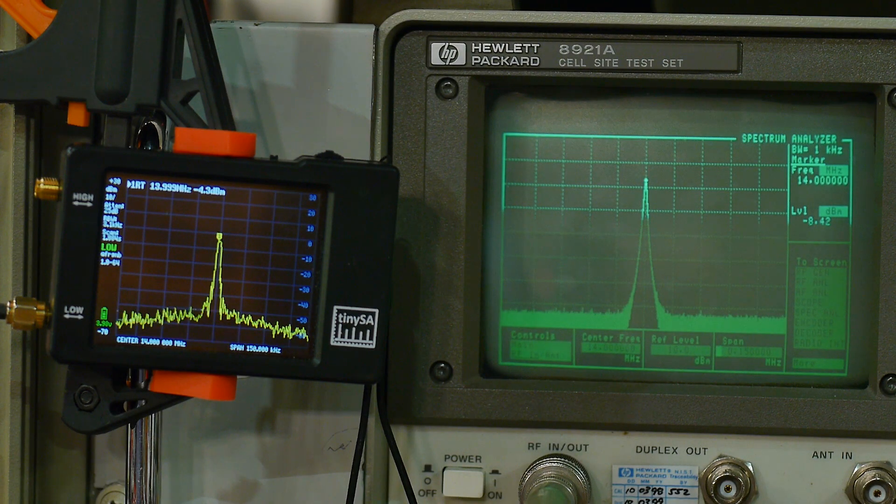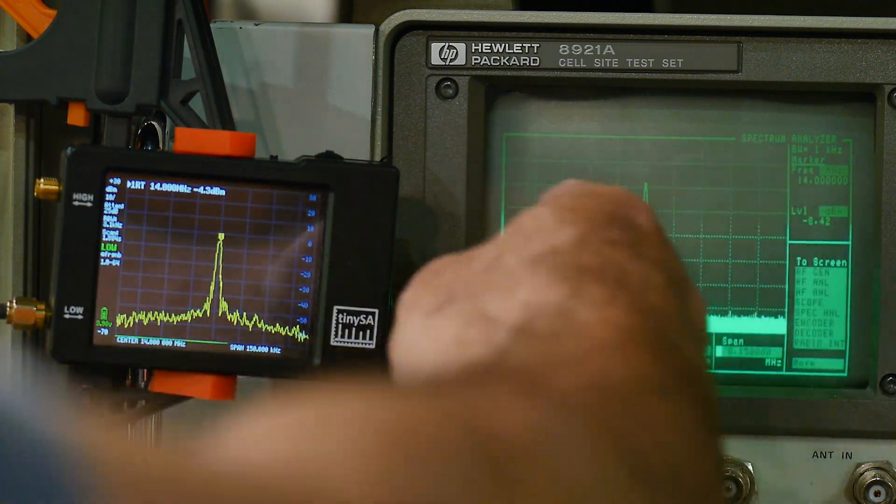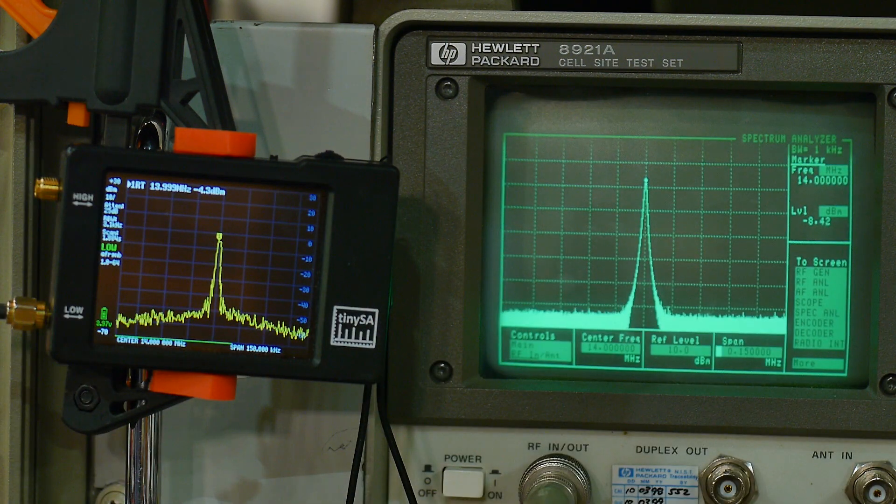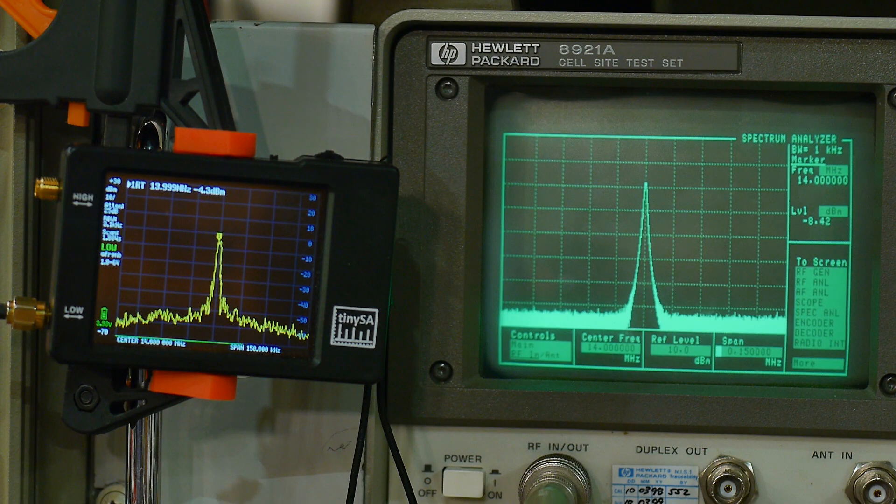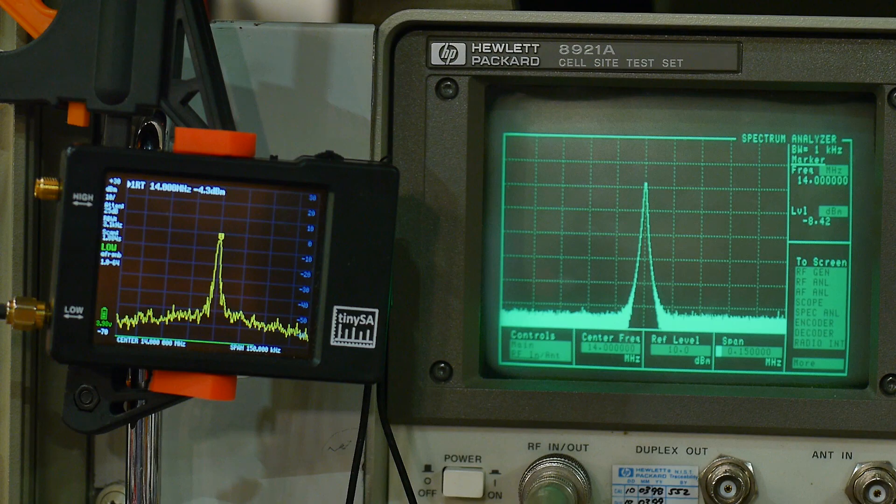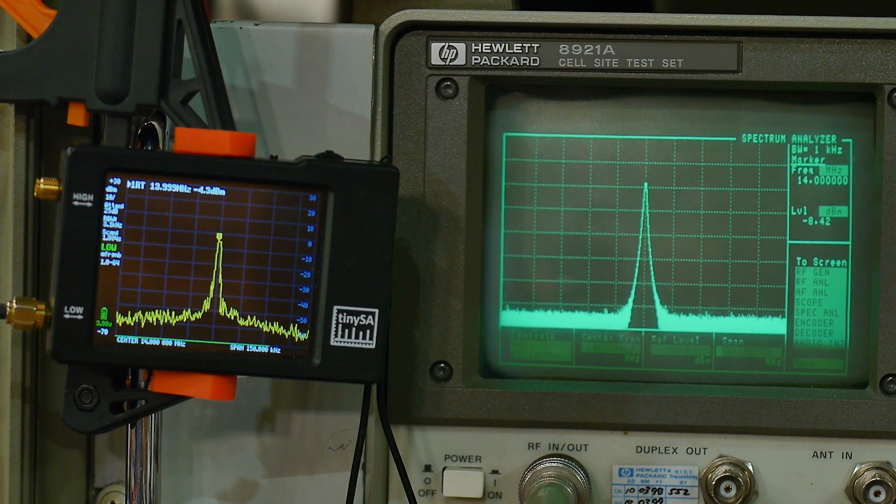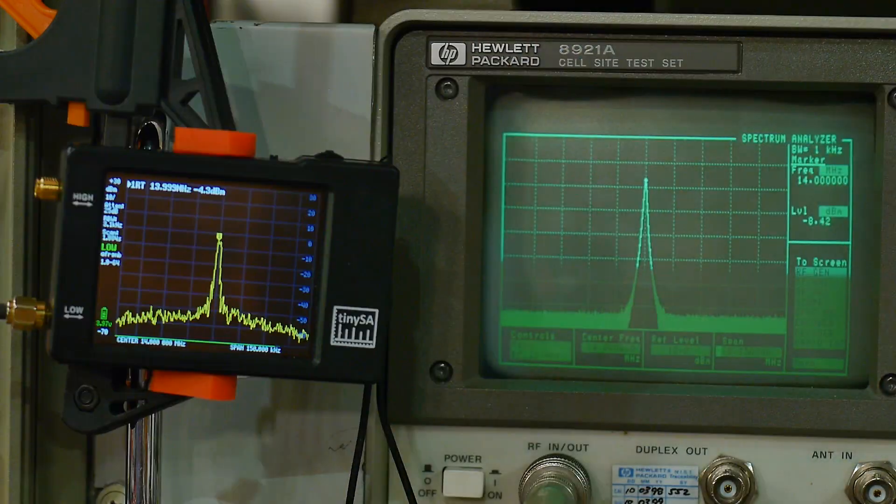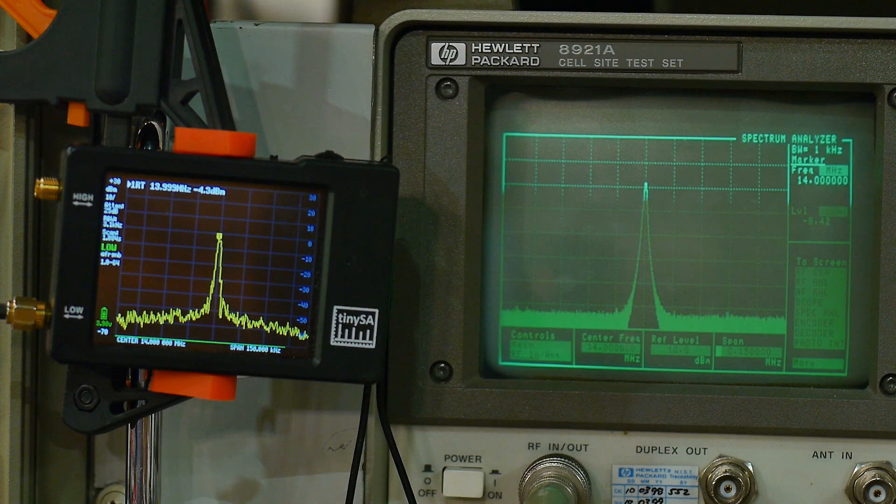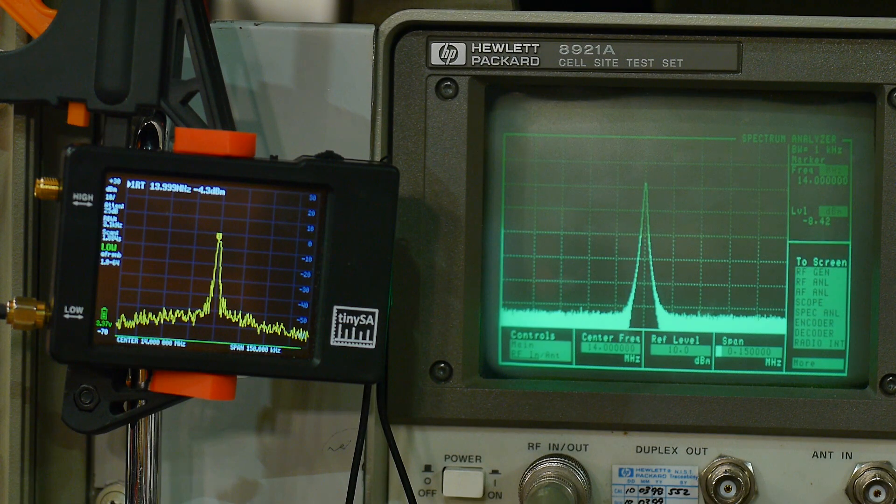That's AM radio and single sideband. Now FM radio is a bit different. FM radio is when you kind of wiggle the signal back and forth to do the modulation. And that expresses itself in frequency domain a little bit differently. So in the frequency domain, we're going to see a whole bunch of sidebands. So let's go ahead and turn on FM modulation.